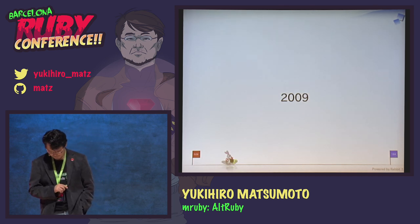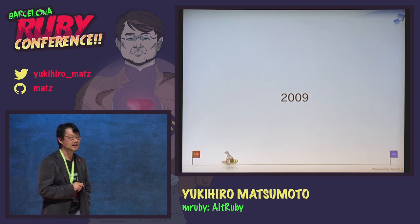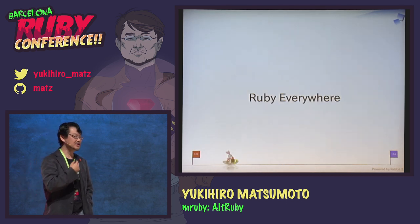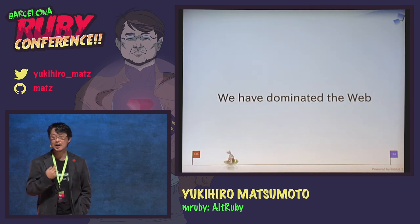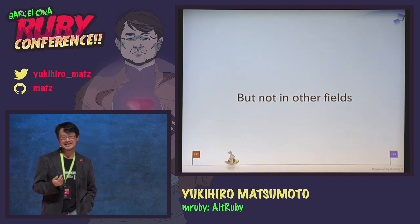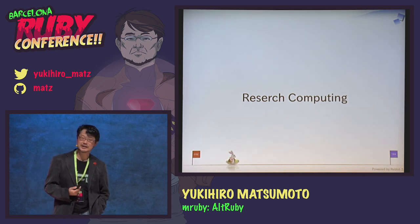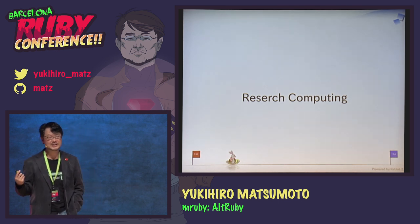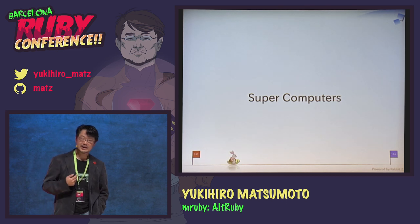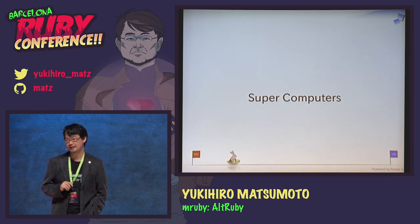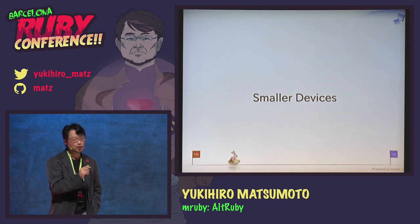The background: in 2009 I talked with engineers from the embedded systems field. I want to see Ruby everywhere. We have dominated the web — almost. But nothing in other fields. In research computing, Python is much stronger, and we have R and recently Julia. Very few people use Ruby in supercomputing, and on smaller devices people use Objective-C, Java, C, or something else.